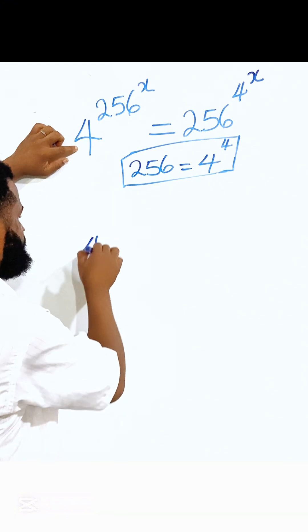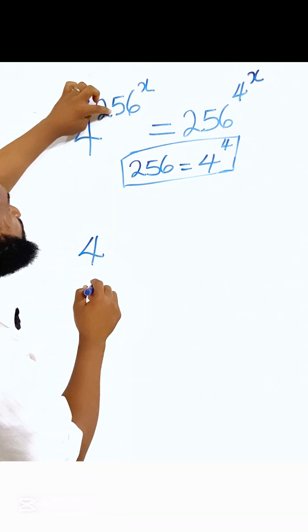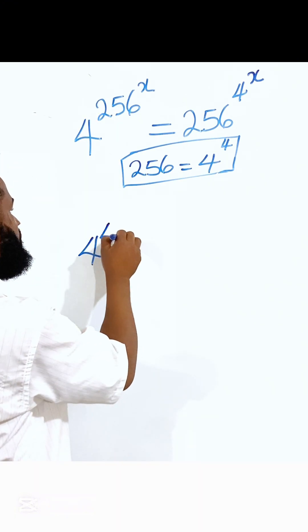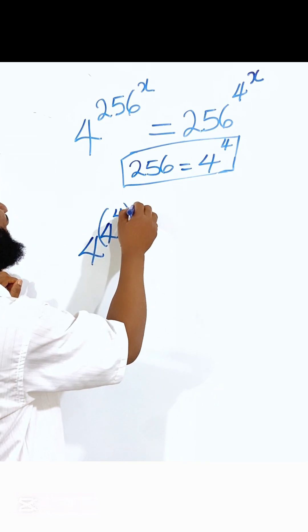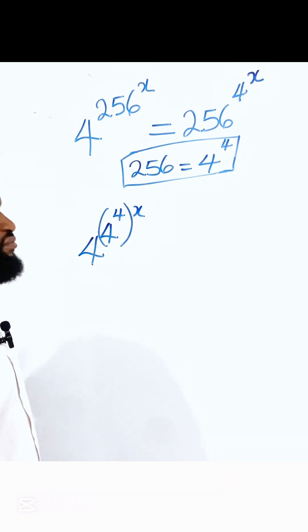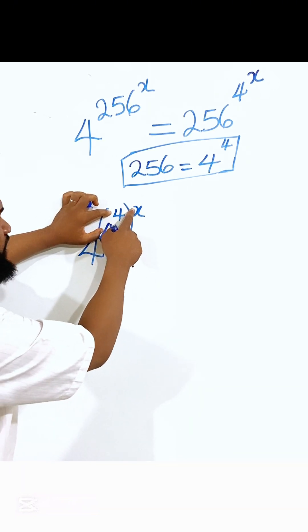I have 4. This 256 is going to be 4 raised to power 4, raised to power x. Because this is 256 raised to power x.